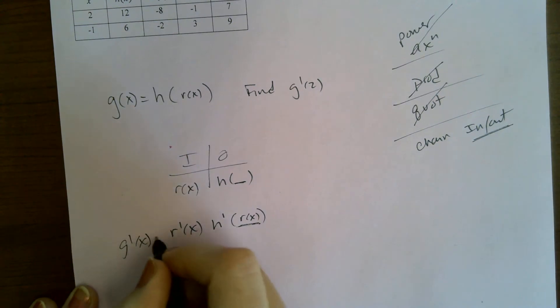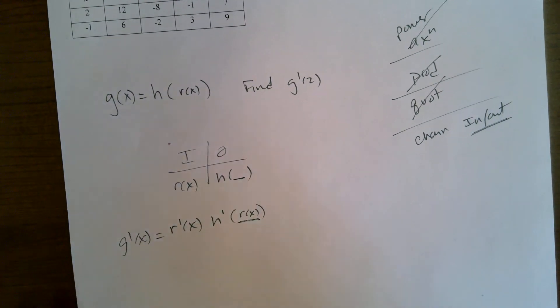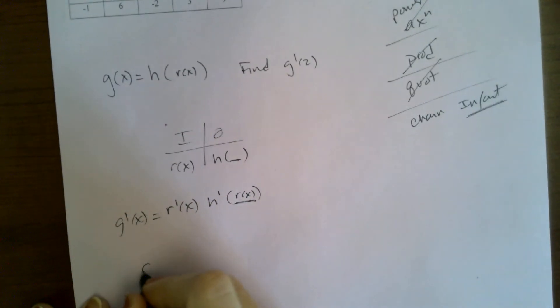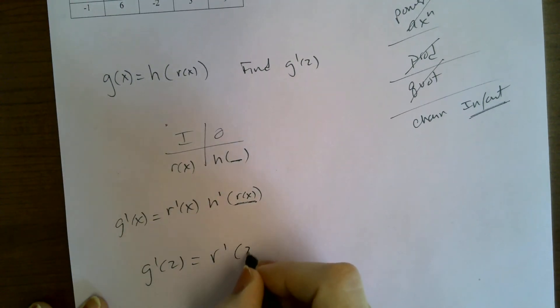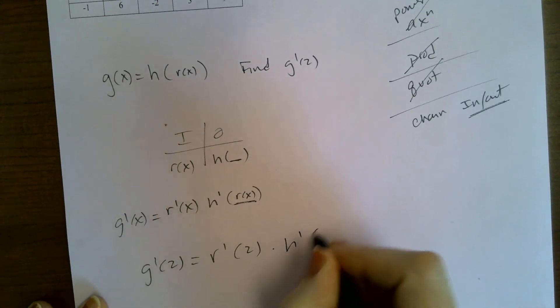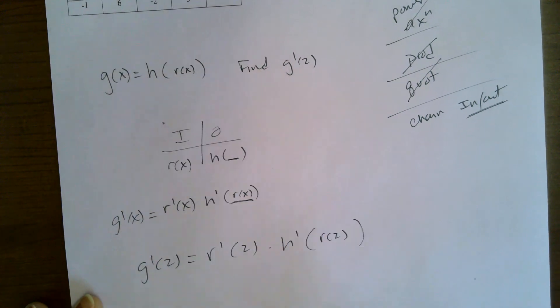Okay, so this is g prime of x. They want g prime of two. So g prime of two, you're just putting a two like that, okay?